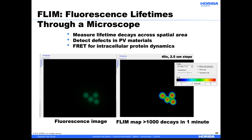Fluorescence lifetimes can also be measured through a microscope to spatially resolve differences in lifetimes from a sample. This method is called Fluorescence Lifetime Imaging Microscopy, or FLIM. FLIM-FRET is a common combination for using FLIM to measure changes in donor lifetimes and ultimately calculate distances within a cell or other sample. FLIM is more recently being used to locate defects in solar cell materials and other photovoltaic films. PV materials typically have lifetimes in the hundreds of nanoseconds range, but the lifetime of a defect in the material could be measured around 100 picoseconds.